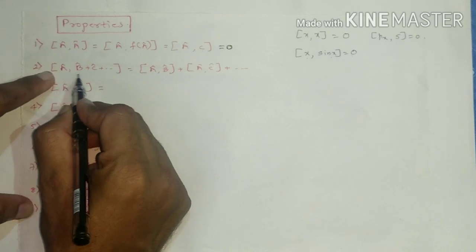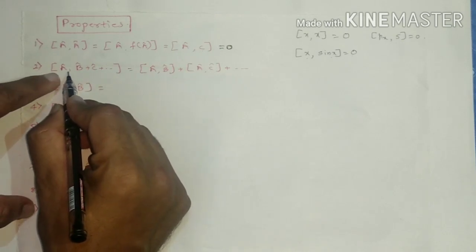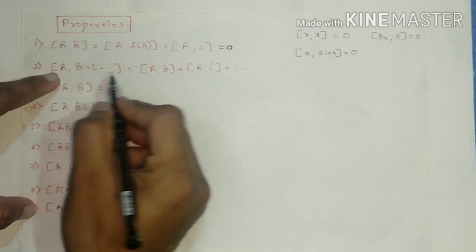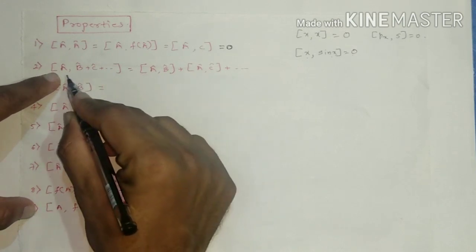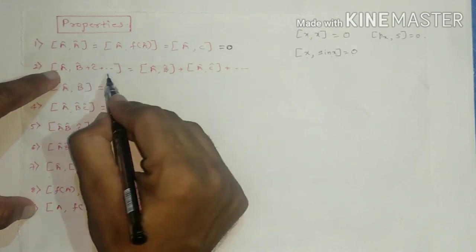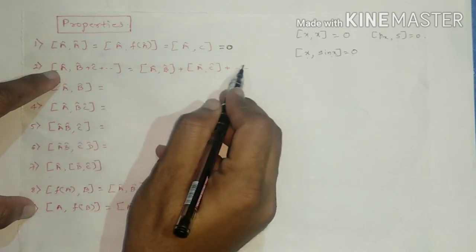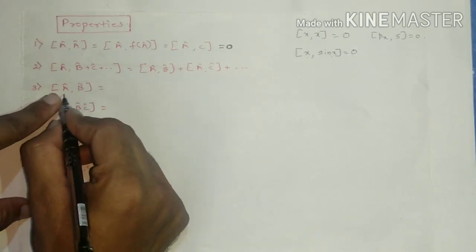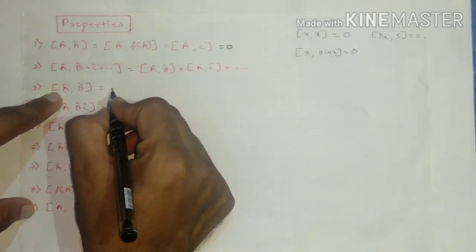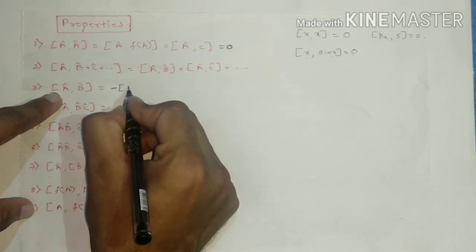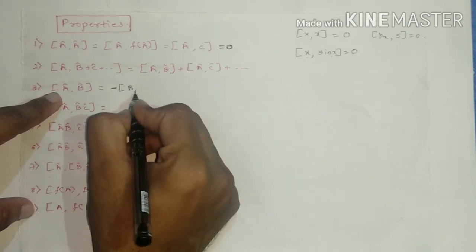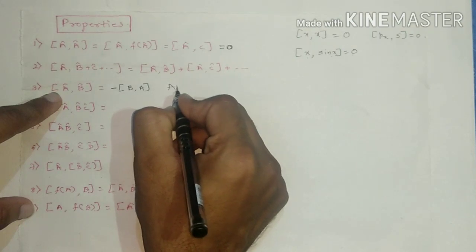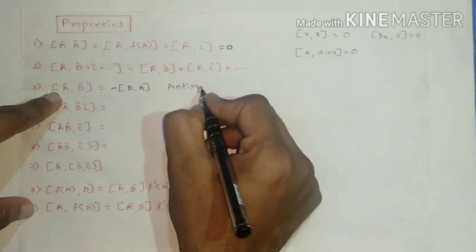The second property: if we have [A, B+C+D], we can apply the distributive law, and this can be written as [A, B] + [A, C] + ... and so on. The third property: [A, B] = −[B, A]. This is the anti-symmetric property — commutator brackets are anti-symmetric.